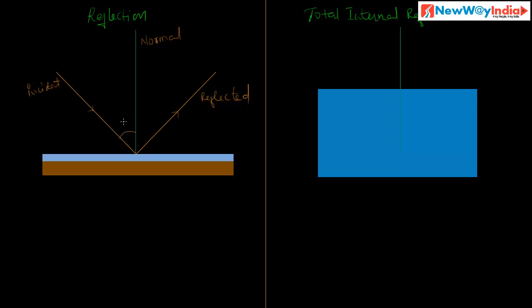This angle is called the angle of incidence and this angle is called the angle of reflection. The angle between the normal and the incident ray is the angle of incidence; the angle between the reflected ray and the normal is the angle of reflection. In reflection, the light ray passes from a rarer medium to a denser medium, and then reflection takes place.